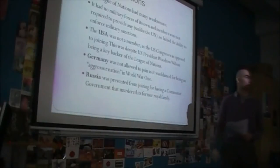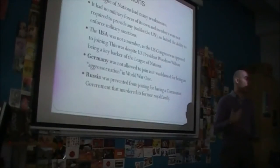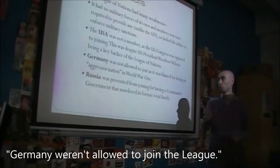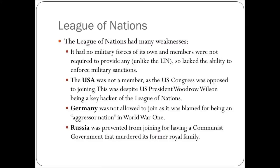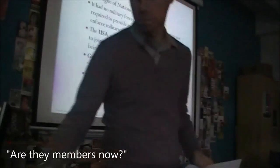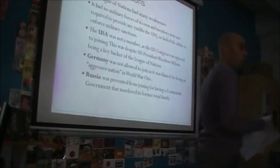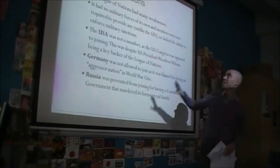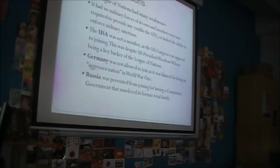Next, we have three key countries that were not members: the USA, Germany, and Russia. Germany was not allowed to join because they were an aggressor nation. Russia was prevented from joining because of the fear of communism. And the USA was not a member because the US Congress didn't want to join, despite the US President being a key backer of the League of Nations. So the President wanted to join, but Congress refused. Three of the biggest world powers at the time were absent. A lack of membership by key countries — if the major world powers aren't members, that is a serious problem.